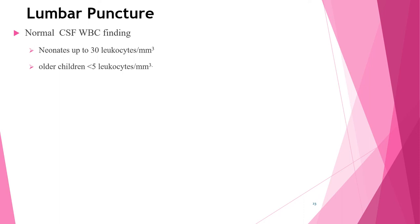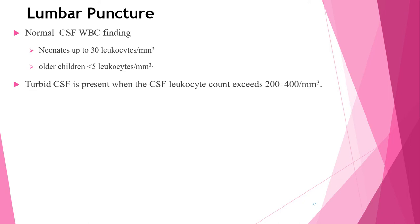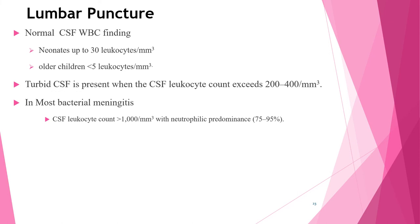After lumbar puncture, CSF must be analyzed. CSF WBC count varies with age: in neonates, up to 30 leukocytes may be normal but the majority should be lymphocytes; in older children, up to 5 cells are normal. Turbid CSF is present when the leukocyte count is greater than 400 per mm³. In most bacterial meningitis cases, CSF leukocyte count is greater than 1,000 with neutrophil predominance of more than 75%.